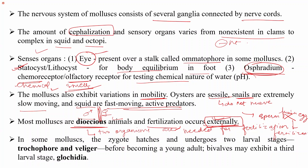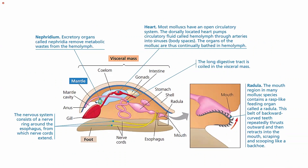In some mollusks, the zygote hatches and undergoes two larval stages — the trochophore and veliger larvae — before becoming a young adult. However, in some cases like Bivalvia, a class of phylum Mollusca, there is a third larval stage called glochidia. This summarizes the different organ systems: visceral mass, mantle, and foot, with gonads, digestive system, gills, and anus each playing specific roles.